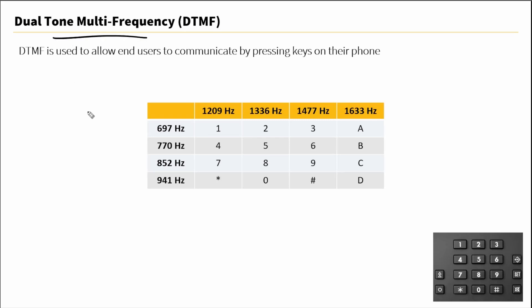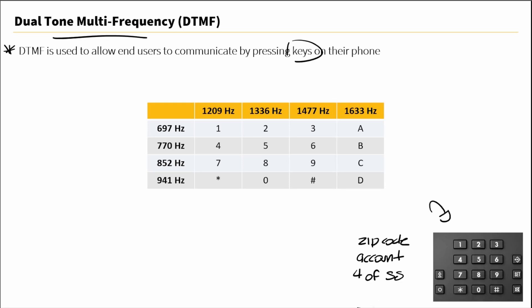DTMF, or dual-tone multi-frequency, is used to allow end-users to communicate by pressing keys on the phone itself. Maybe you've called an IVR, maybe you've been asked for your zip code, maybe to enter your account number, or the last four of your social security if you're in the U.S., or maybe you've entered a PIN number. When we press these keys and enter those numbers, the system recognizes the number that you press, all due to the magic of DTMF.